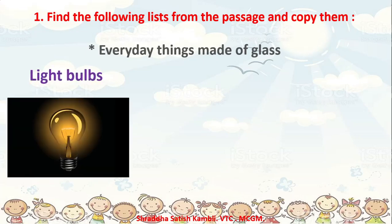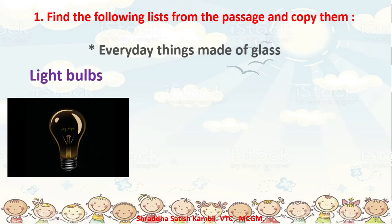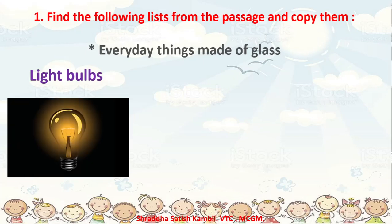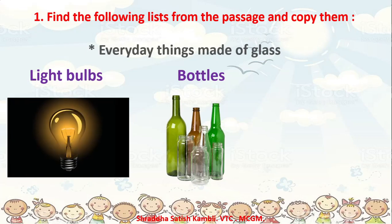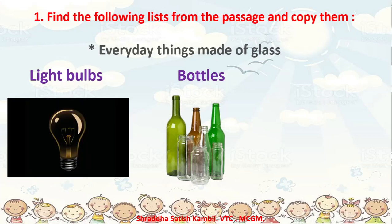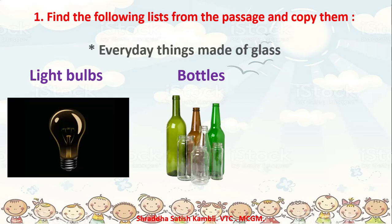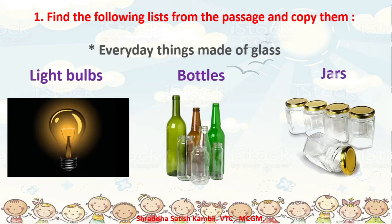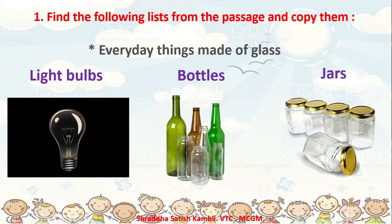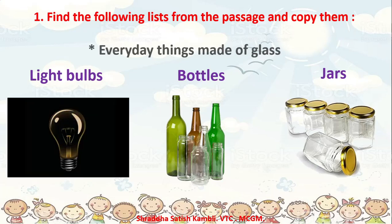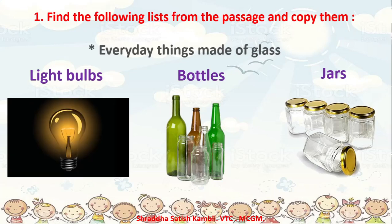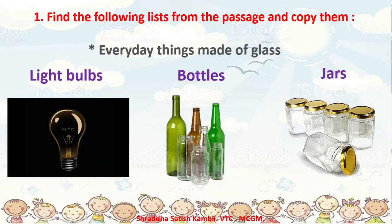We have light bulbs which are made up of glass. Have you seen these kinds of light bulbs? Nowadays we have LED bulbs also. Then you have bottles which are made up of glass - these are still commonly in use when you buy jams, when you buy sauces. Then you have jars which are made up of glass - when you buy coffee powder or tea powder, you get it in these kinds of jars. There are a few more everyday things which are made up of glass and they are mentioned in the textbook - so go back, read the passage and try to find the names of other things which are made up of glass.